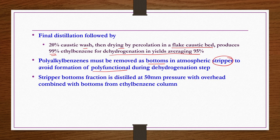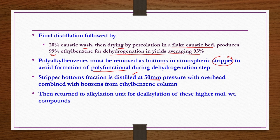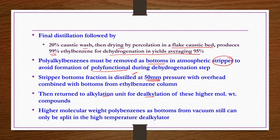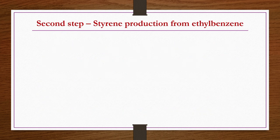Polyalkylbenzenes must be removed as bottoms in the atmospheric stripper to avoid formation of polyfunctional compounds during the dehydrogenation step. The stripper bottoms fraction is distilled at 50 mm pressure with overhead combined with bottoms from the ethylbenzene column, then returned to the alkylation unit for dealkylation. Higher molecular weight polybenzenes or polyethylbenzenes as bottoms from vacuum stills can be split in the high-temperature dealkylators. This completes the purification step for ethylbenzene.